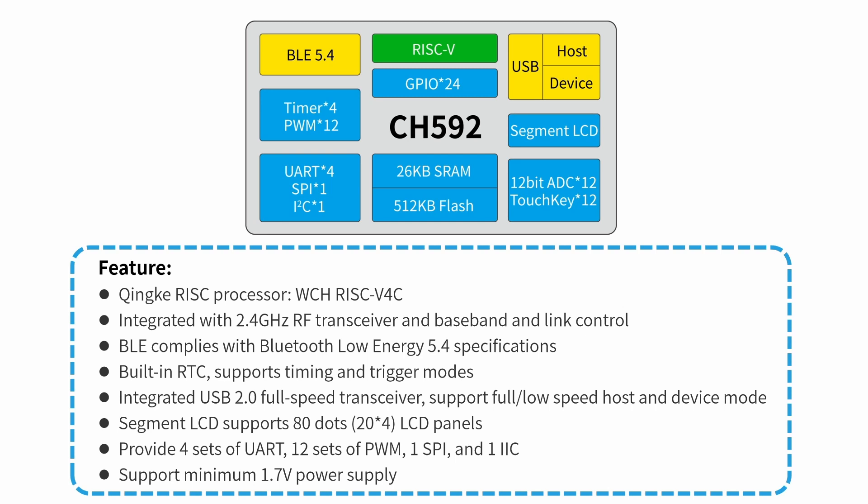Here are some main features of the CH-592: it has 26 kilobytes of RAM and 512 kilobytes of flash. It is also integrated with a 2.4 GHz RF transceiver and baseband link and control. It is BLE compliant and supports BLE 5.4, and it has an integrated USB 2.0 full-speed transceiver. It has multiple peripherals like UART, PWM, SPI, and I2C, and can support a low power supply of about 1.7 volts.